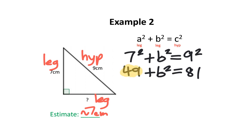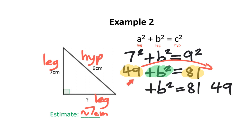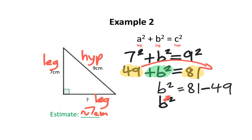You'll notice that we have a number here and a number over here, while this is a variable. Like terms like to be together — both 49 and 81 are like terms since they are both just numbers. Since they like to be together, I'm going to move 49 to the other side of the equal sign. When you bring a number to the other side, it becomes the opposite, so this is no longer 49 — it is now negative 49. We can do 81 subtract 49, and that gives us 32.